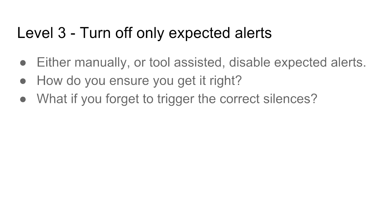Next you start looking at turning off expected alerts. Either manually by clicking through things, or hopefully with the aid of a tool pretty quickly, you turn off what alerts you expect from maintenance. Then it starts to have fun making sure you get it right. And of course you'll inevitably either forget to trigger things, or just go — this is all too hard — and select all.